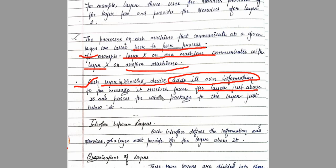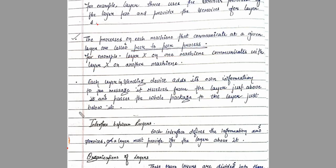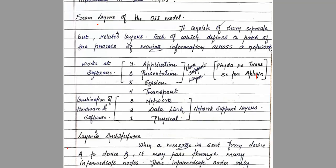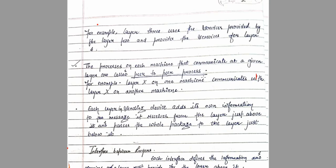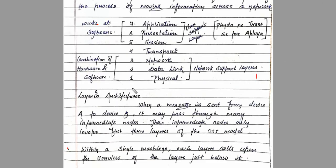Now, in the layered architecture, each layer — when it receives a packet from the layer above — embeds its own information and passes the whole package to the next layer below. To recap: the OSI model has seven layers — Physical, Data Link, Network, Transport, Session, Presentation, and Application. In the mnemonic, these can be remembered as layers one through seven. For intermediate nodes, only the lower three layers are used; source and destination use all seven.